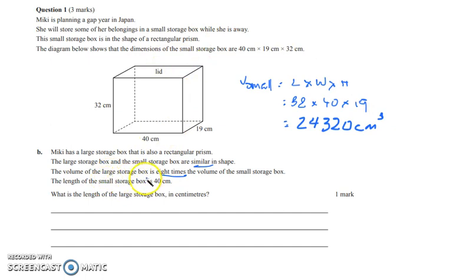So this is the volume of the small box. The volume of the large box is 8 times the volume of the smaller box. So 24,320 times by 8 would give us a volume of 194,560 centimeters cubed.